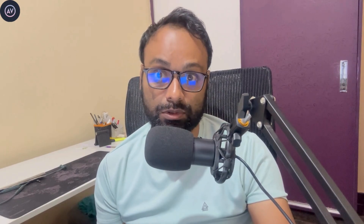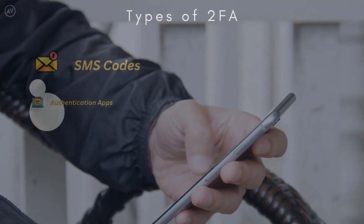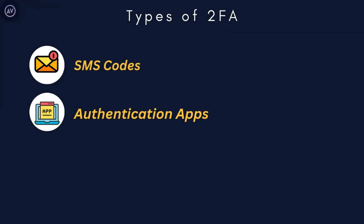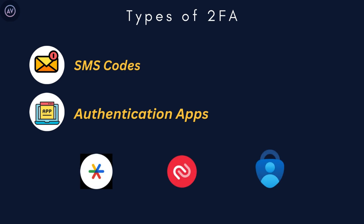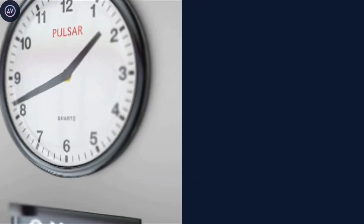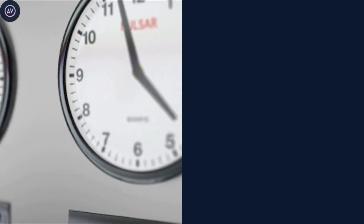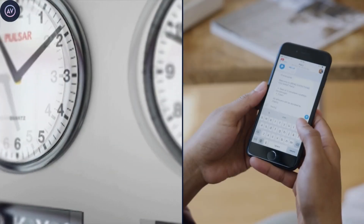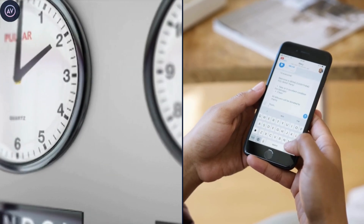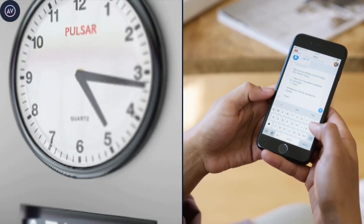Number two: authentication apps. Next up are authentication apps like Google Authenticator, Authy, or Microsoft Authenticator. These apps generate time-based codes that refresh every 30 seconds. Unlike SMS codes, they don't rely on your phone number, making them much more secure. If you're looking for a secure and easy-to-use option, I highly recommend using an authentication app.